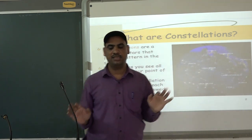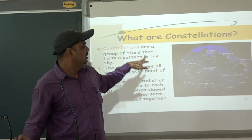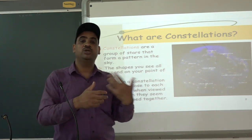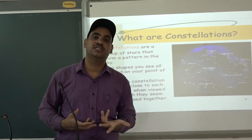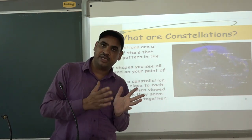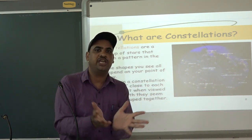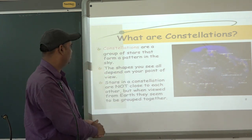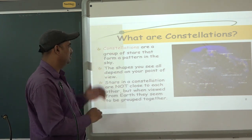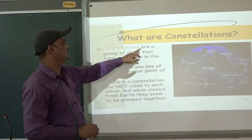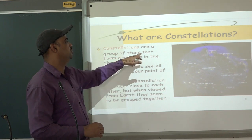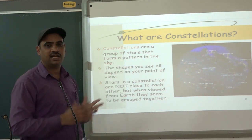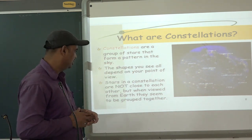The formation of stars coming together and making a particular shape is called a Constellation. It is very simple — constellations are groups of stars that form a pattern in the sky.